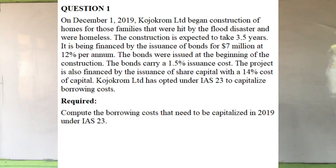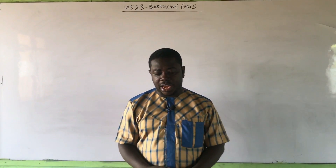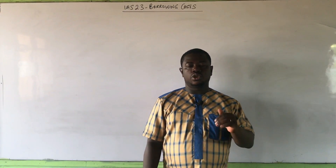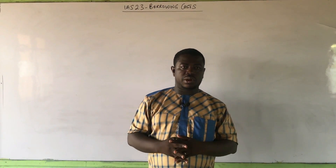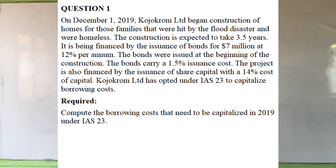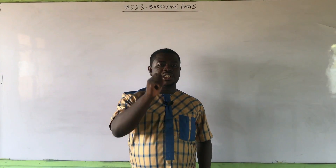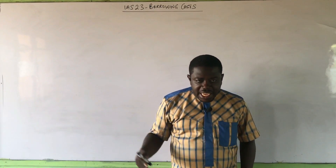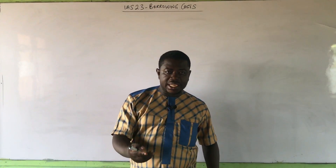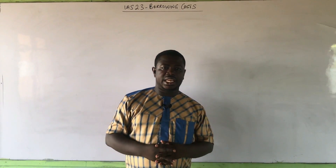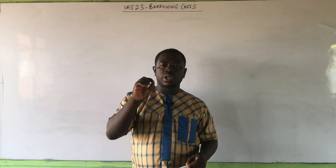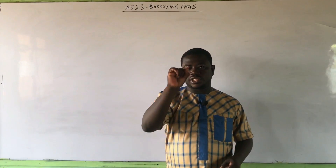We are told that it's being financed by the issuance of bonds for $7 million at 12% per annum. So once it's per annum, you know that the only per annum element related to borrowing costs is interest — 12% interest on the $7 million. We are also told that the bonds carry a 1.5% issuance cost. Issuance cost means that at the time of issuing the bonds, they incurred some costs. Instead of giving the exact amount, they have given it as a percentage on the principal amount of $7 million. That 1.5% of $7 million gives us the issuance cost, and the issuance cost is ancillary cost.